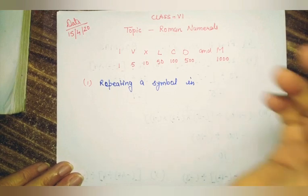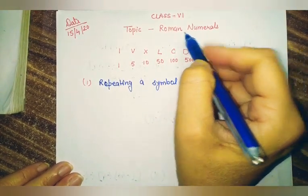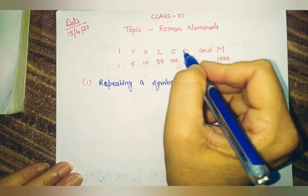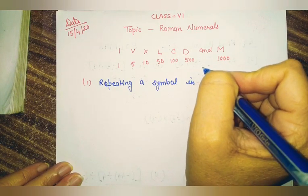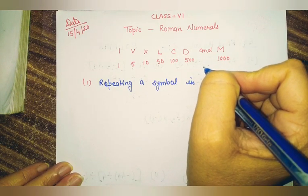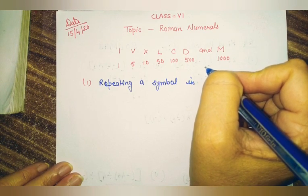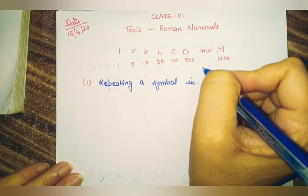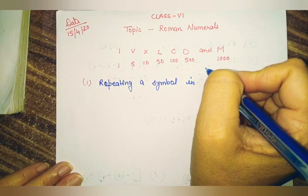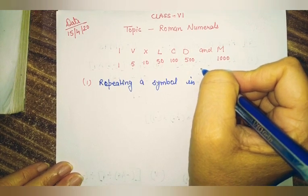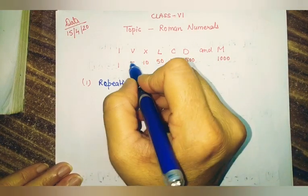Good morning students. Our today's topic is Roman numerals. Roman numerals derived from Roman civilizations. Roman civilization had been a great civilization some centuries back. While the number system was going through different phases, Romans developed a number system using only 7 symbols.